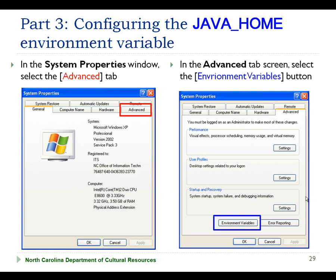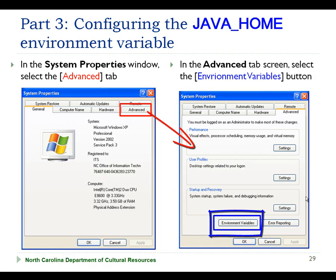This will display the System Properties window. In the System Properties window, you're going to select the Advanced tab. Within the Advanced tab window, you're going to select the Environment Variables button that you see down at the bottom of the screen.